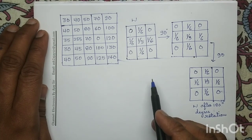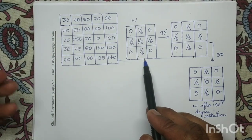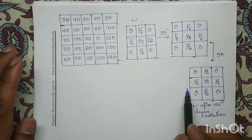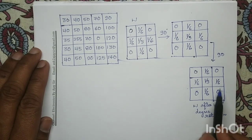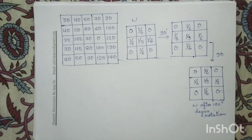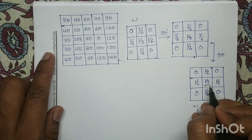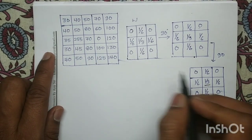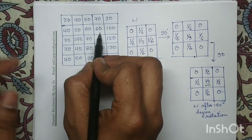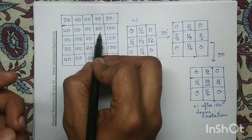In convolution operation, the given mask we have to rotate it first by a total 180 degrees, and now we have to identify the center of this rotated mask. The center of this rotated mask is 1/3. So this center of the mask we will place at our desired shaded pixel value and we will perform the convolution operation.